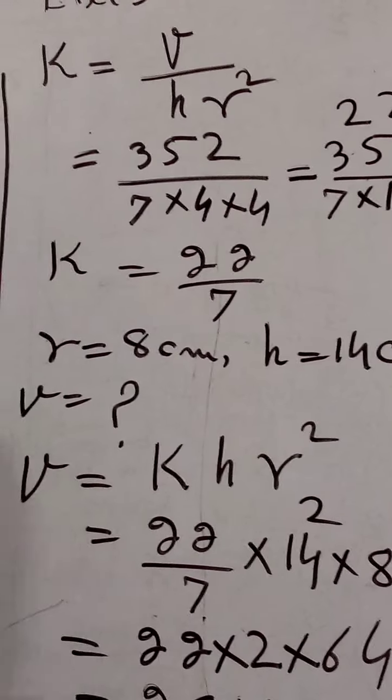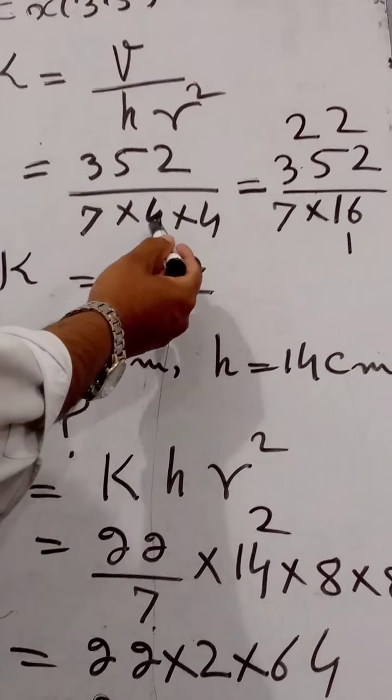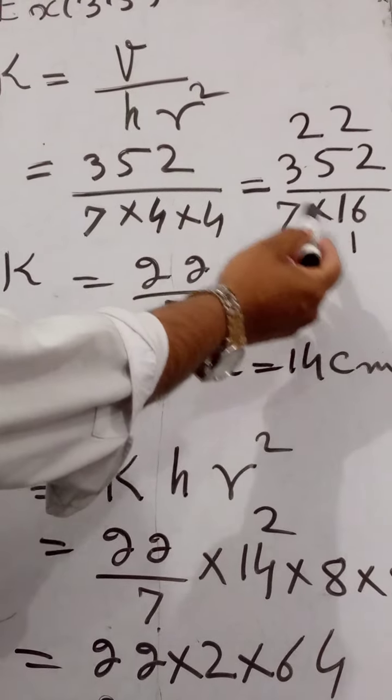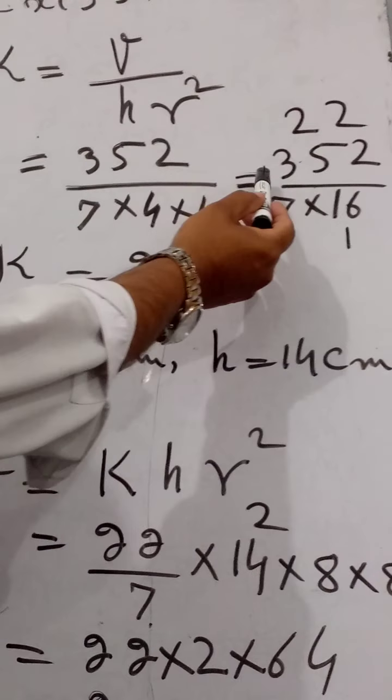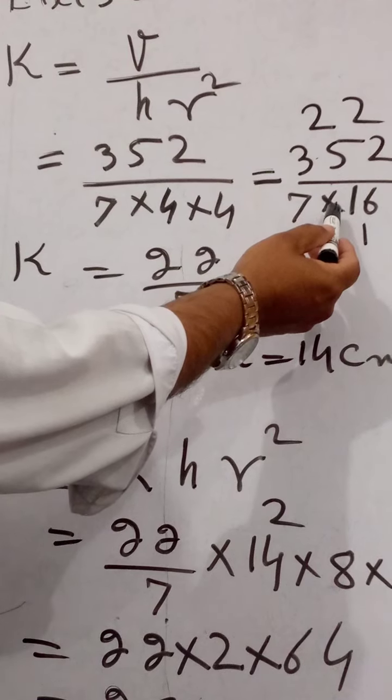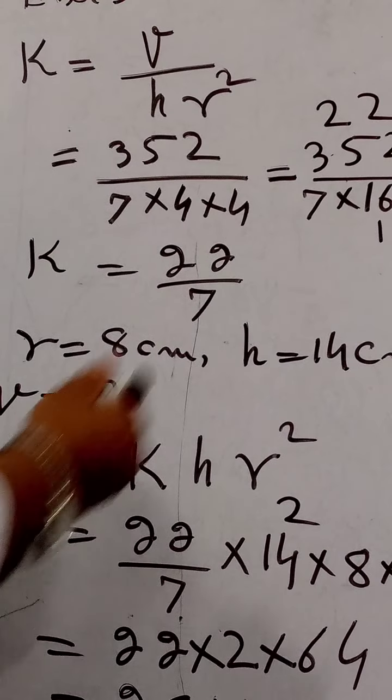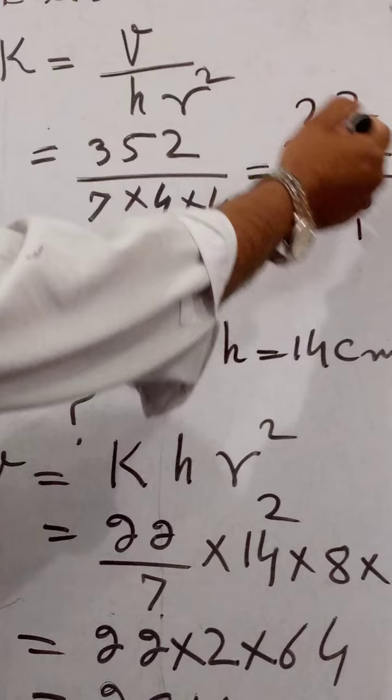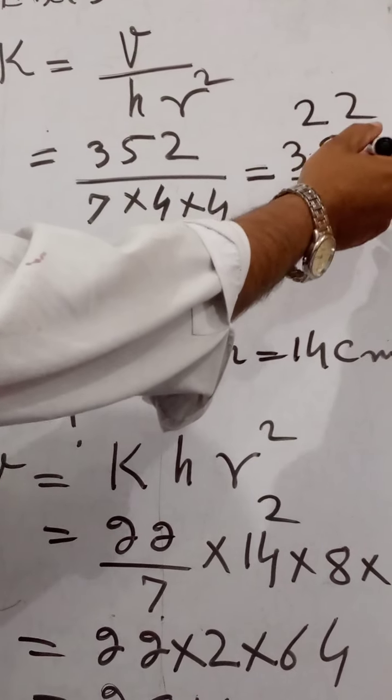By simplification, 4 into 4 is equal to 16. This is equal to 352 divided by 7 into 16. 2s are 32 and 16, 2s are 32.